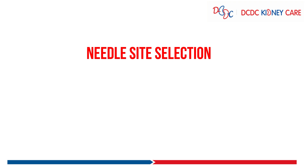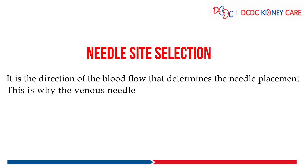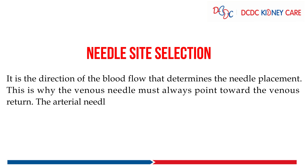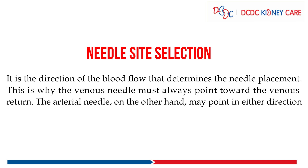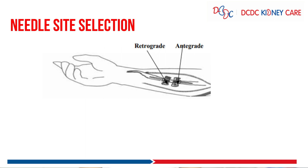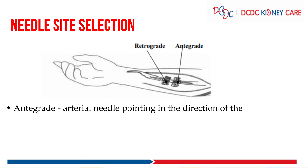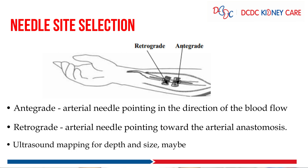Needle side selection: it is the direction of blood flow that determines the needle placement. The venous needle must point towards the venous return. The arterial needle, on the other hand, may point in either direction — antegrade, when the arterial needle points in the direction of blood flow, or retrograde, when the arterial needle is pointed towards the anastomosis.